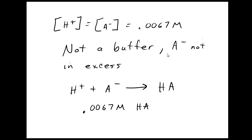It would probably be better if we calculated both of them and it would be a check for us. We'd go, oh, I got 0.0067 both times. I must be right. So at this point, when our H plus is equal to our A minus, we don't have a buffer anymore. A minus is not in excess anymore. All of the H plus is going to consume all of the A minus. And I'm just going to be left with HA. 0.0067 molar of it.